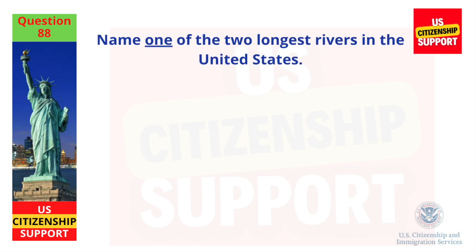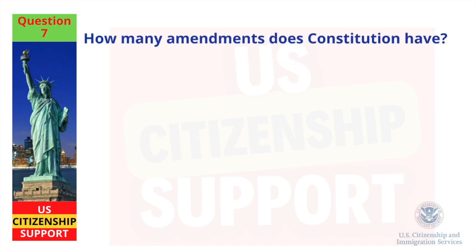Name one of the two longest rivers in the United States. Missouri River. How many amendments does the Constitution have? Twenty-seven.